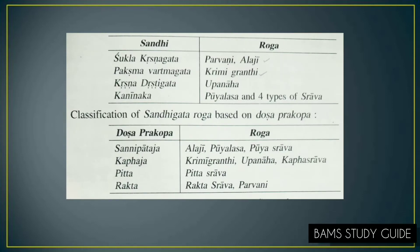Based on the Sandhi involved: in Parvani and Alaji, Shukla-Krishna Gata Sandhi is involved; in Krimigrandhi, Pakshmavartma Gata Sandhi; in Uppanaha, Krishna Drishti Gata Sandhi; and in Pooya Alasa and the four types of Strava, Kaninika Sandhi is involved.